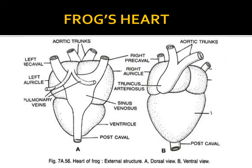Now I have a slide showing the anterior and posterior views of frog's heart. Picture A shows the posterior or dorsal view of frog's heart. Picture B shows the ventral or anterior view. In picture A, we can see the sinus venosus, which is the pacemaker, and the two auricles. In picture B, the anterior view, we can see the two auricles, ventricle, and the truncus arteriosus, which gives rise to the aortic trunks.